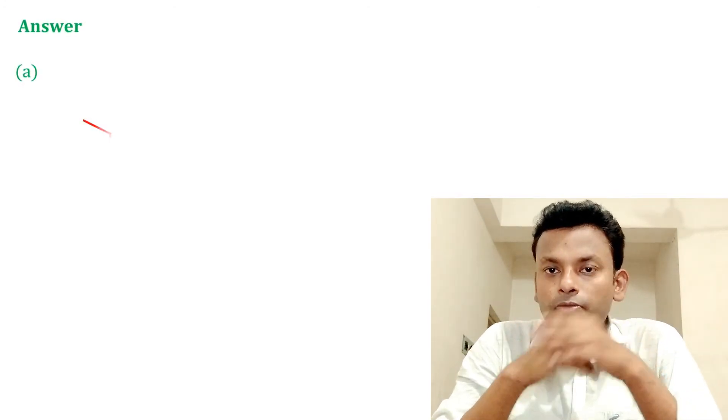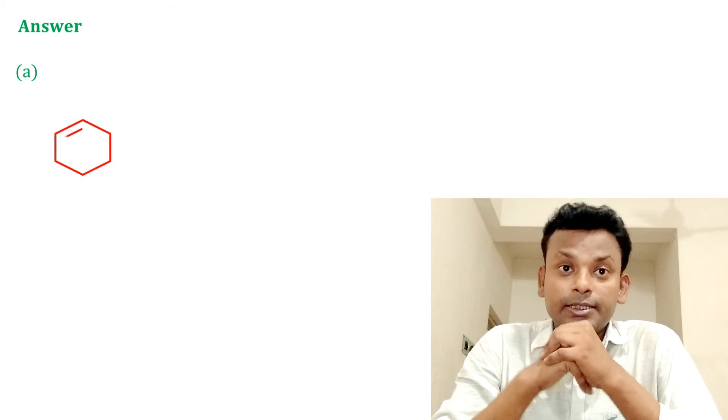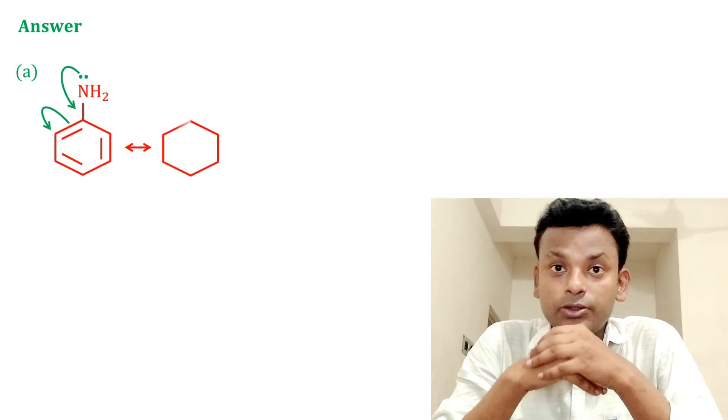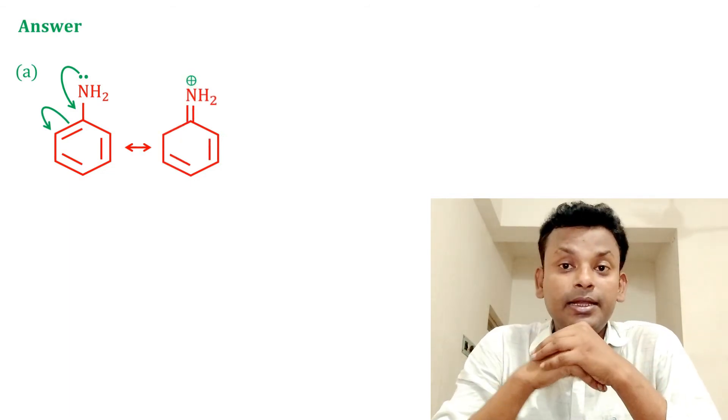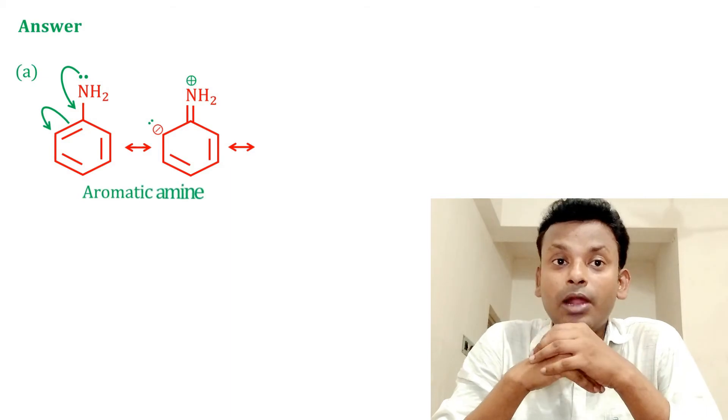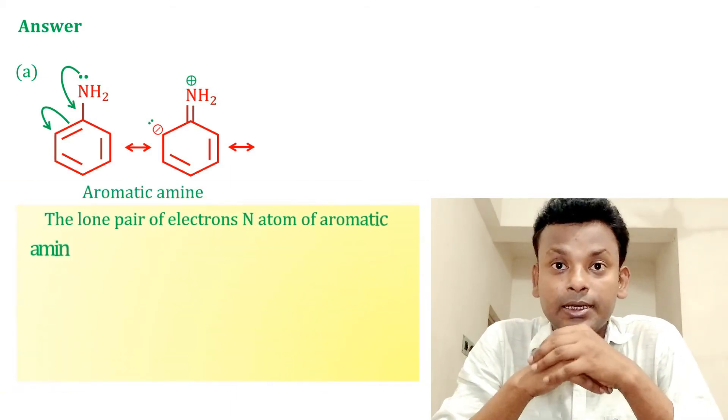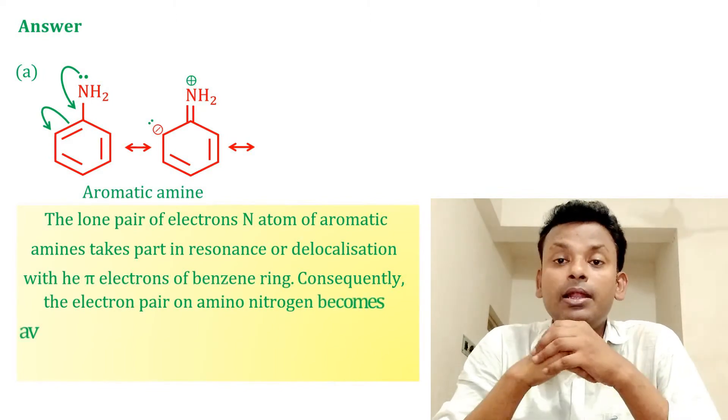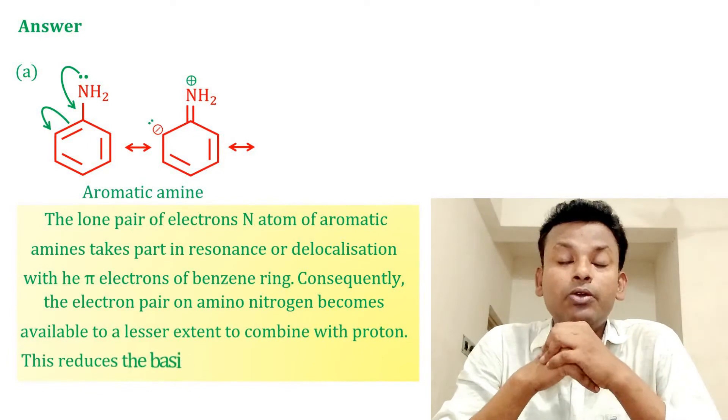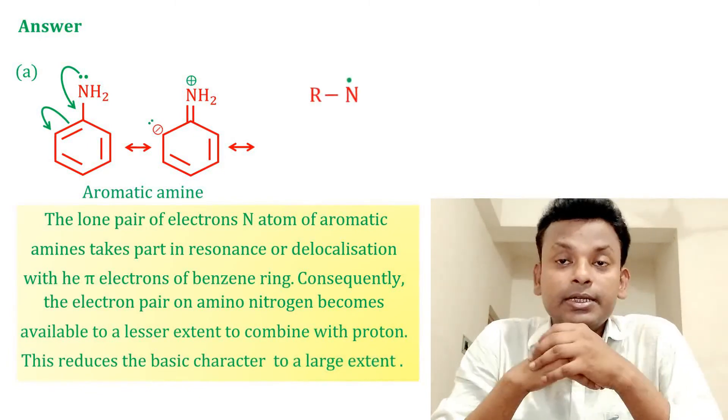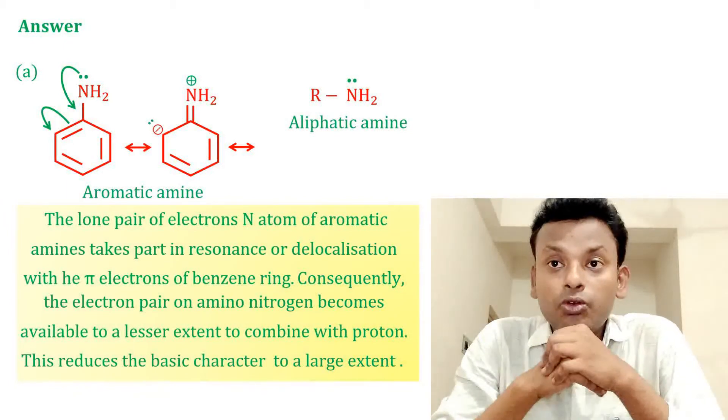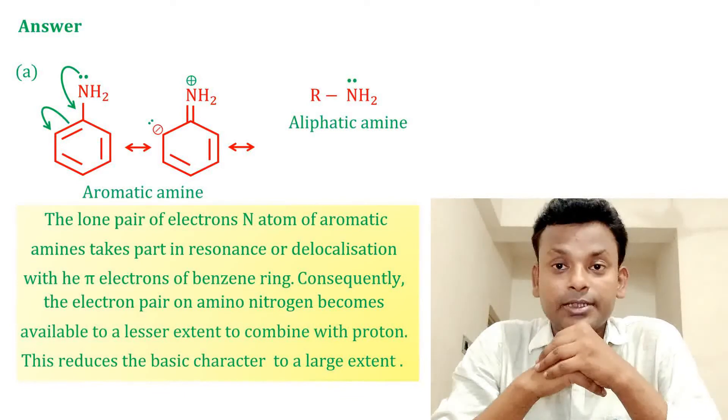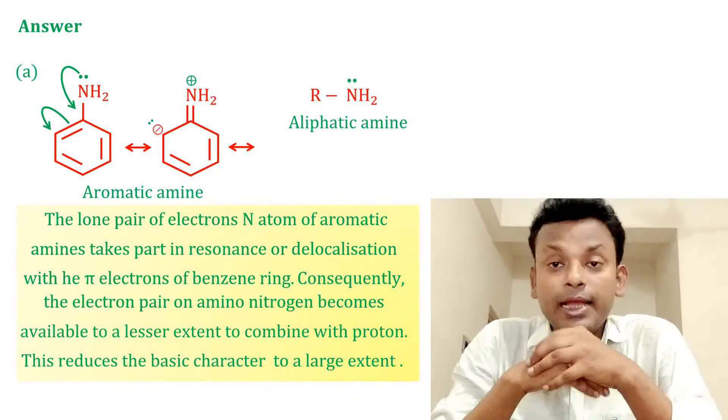So we explain more. Aniline forms resonating structure. The lone pair electron of nitrogen atom of aromatic amines take part in resonance or delocalization with pi electron of benzene. Consequently, electron pair of amino nitrogen becomes available to lesser extent to combine with proton. This reduces the basic character to a large extent. But in aliphatic amines do not have any resonating structure.